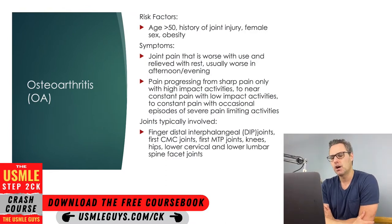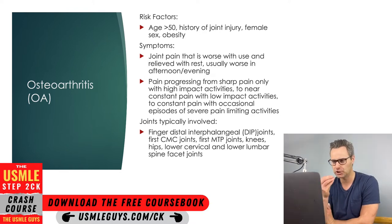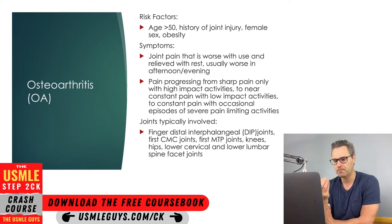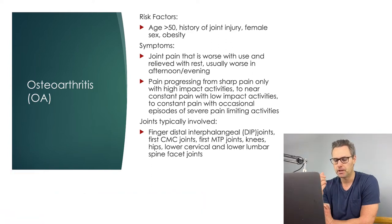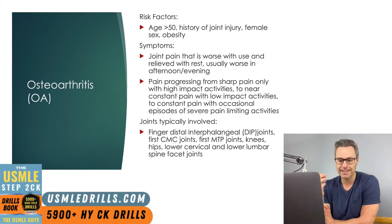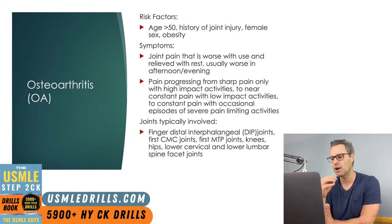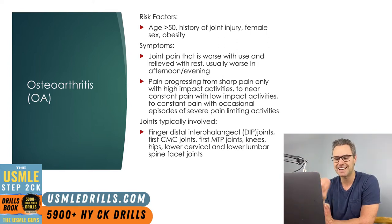First up, we're going to talk about osteoarthritis, also known as OA. This is the most common form of arthritis, and it occurs when the cushioning cartilage in the joints that helps to prevent the bones from directly rubbing against one another erodes away. Older individuals are more likely to suffer from OA because cartilage wears away with use over time. Injury to a specific joint can also increase the likelihood of developing OA. An important risk factor is obesity, especially for OA in the knee or hip, because obese patients sustain higher loads on the joints, wearing away cartilage faster.